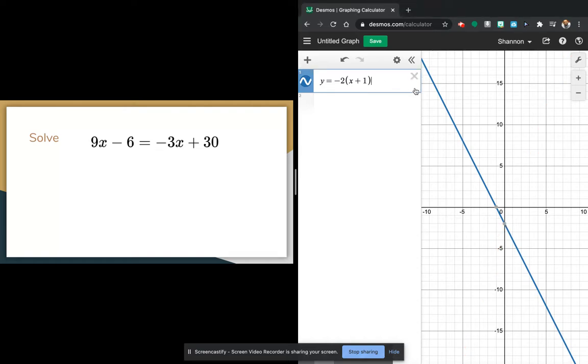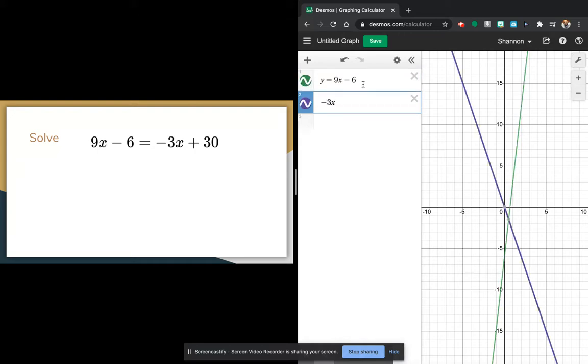So again, we're trying to see when those values are equal to each other. So we're going to do y equals 9x minus 6, and then y equals negative 3x plus 30.